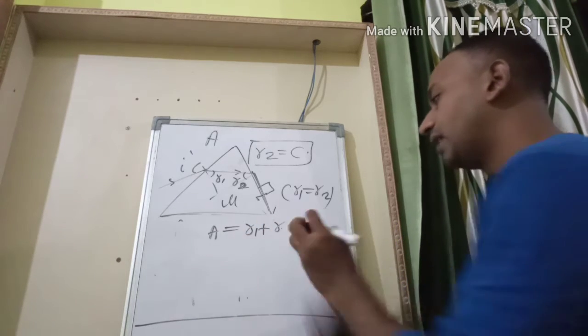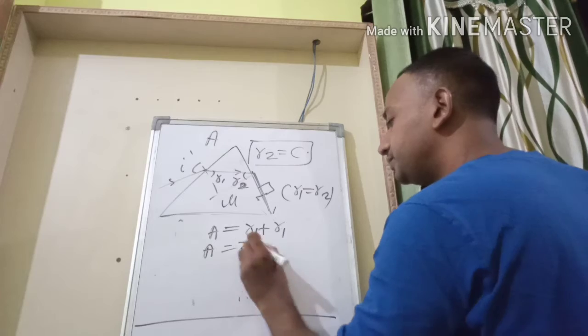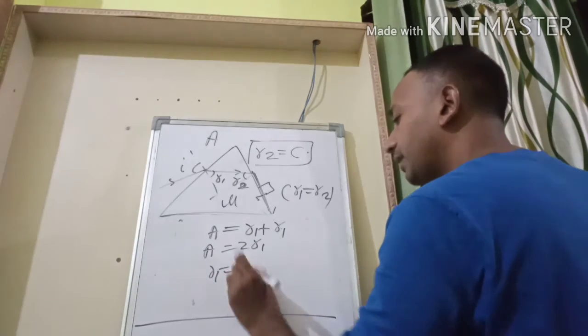I have replaced r2 with r1, so it becomes 2r1. So we have got r1 equal to A/2.